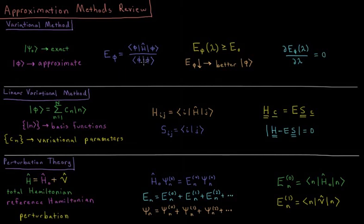And the variational method says that the energy of any approximate wave function is always going to be greater than or equal to the energy of the true exact wave function. So the lower the energy of our approximate wave function goes, the better of an approximation it is to the true ground state wave function and the true ground state energy.